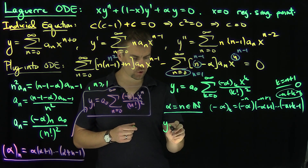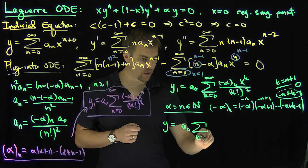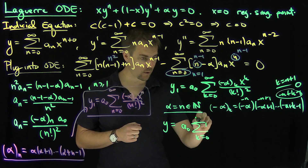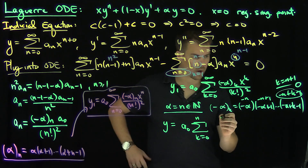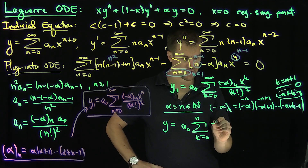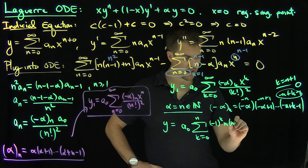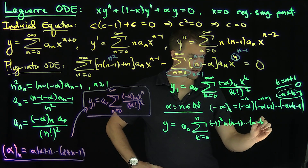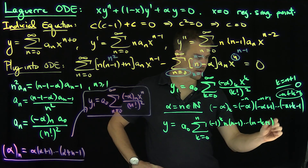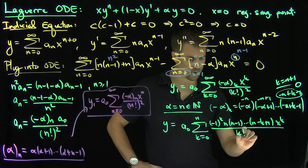So if alpha equals n, the solution y becomes a_0 times the sum from k equals 0 up to n of negative 1 to the k, times n times n minus 1 down to n minus k plus 1, times x to the k, all divided by k factorial squared.